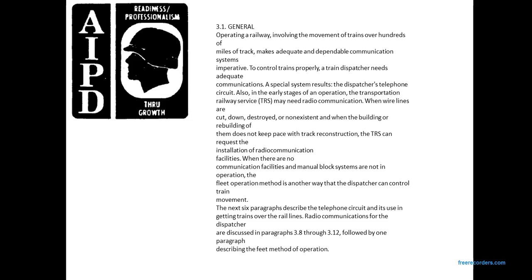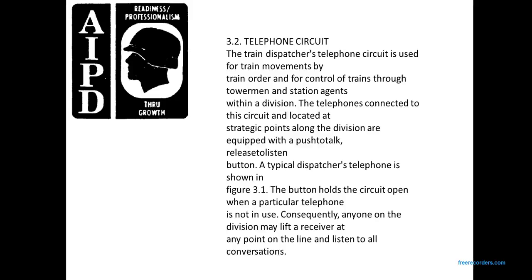The next six paragraphs describe the telephone circuit used in the beginning of train movement over rail lines, and radio communication for the dispatcher. Paragraphs 3-8 and 3-12 are followed by paragraphs describing the fleet method of operation. Paragraph 3-2 covers the telephone circuit.